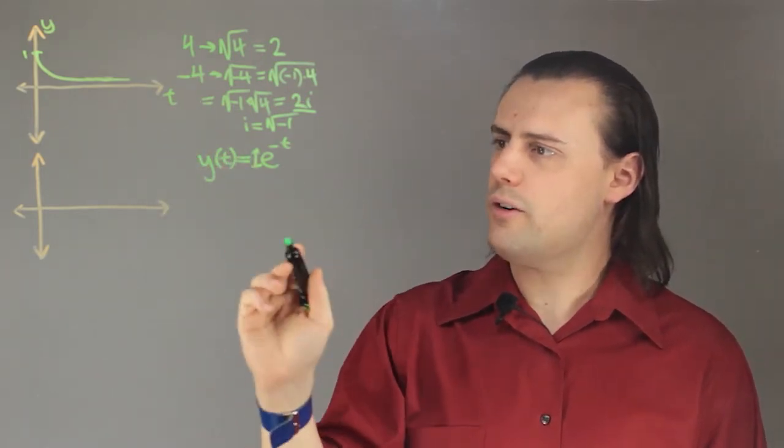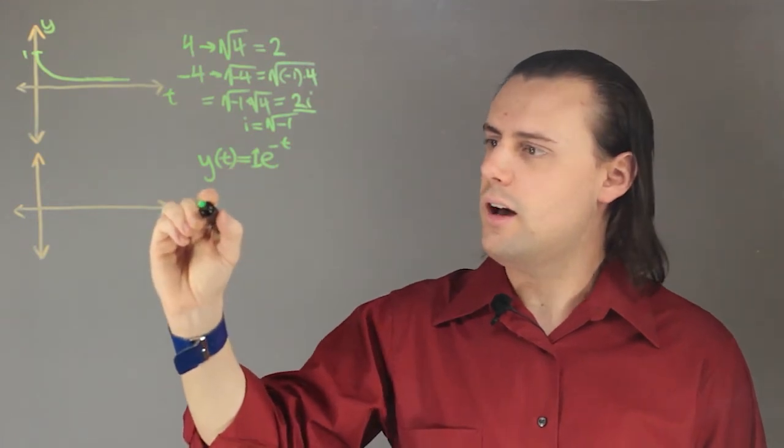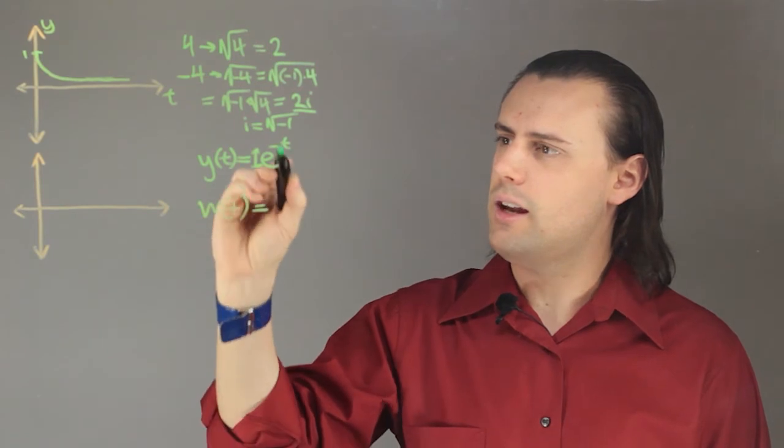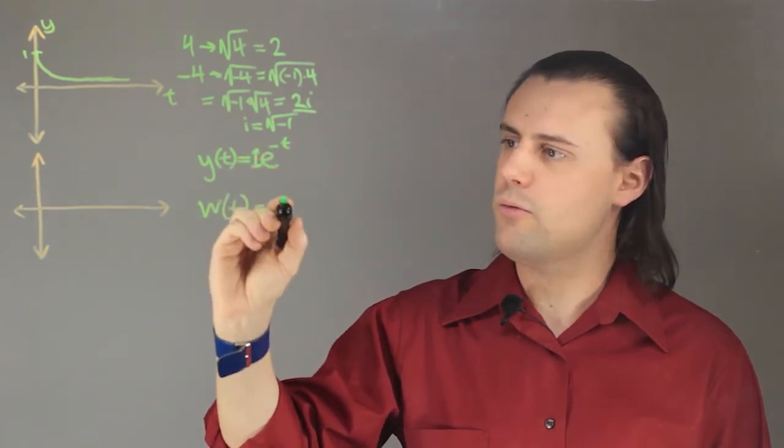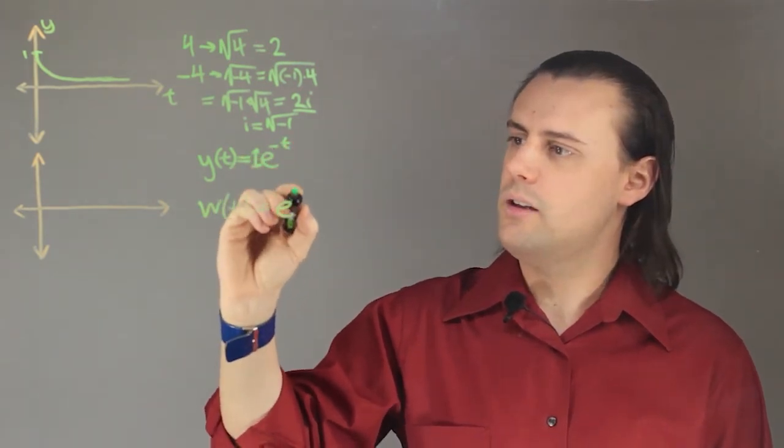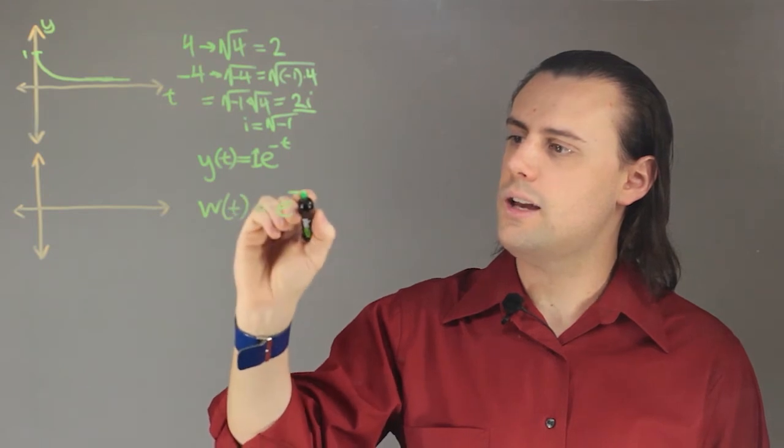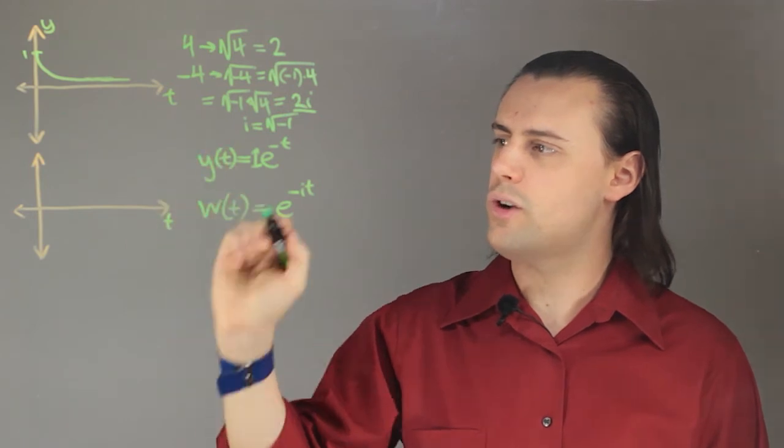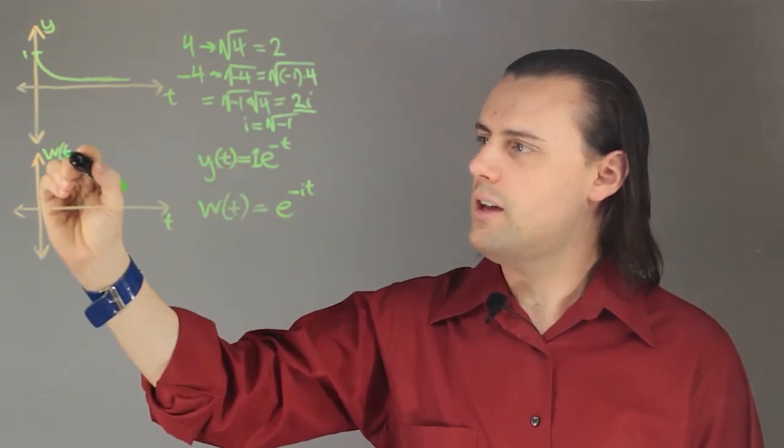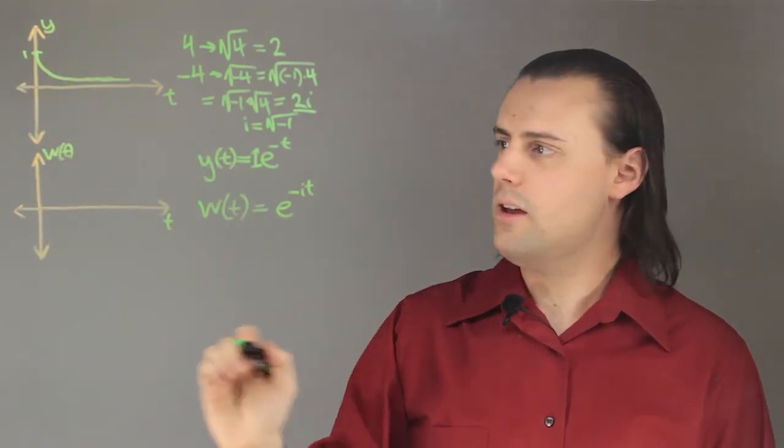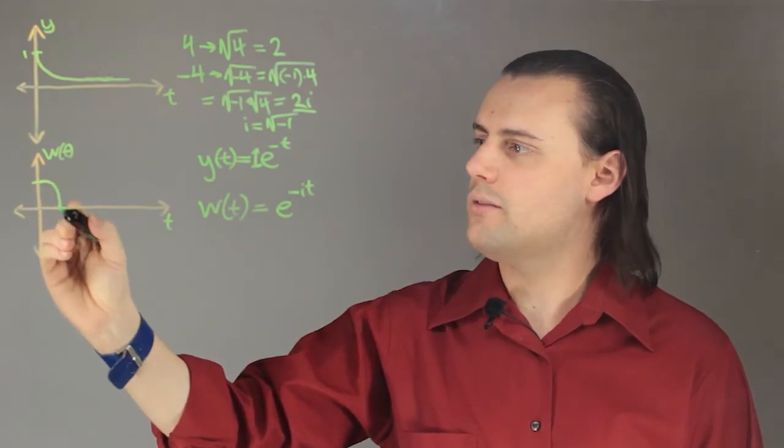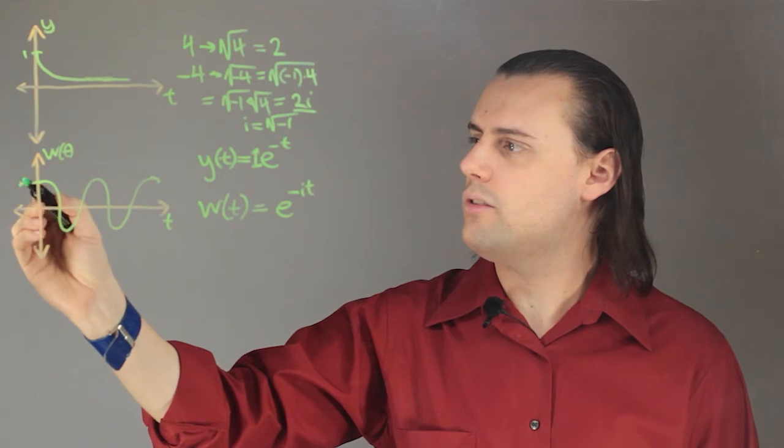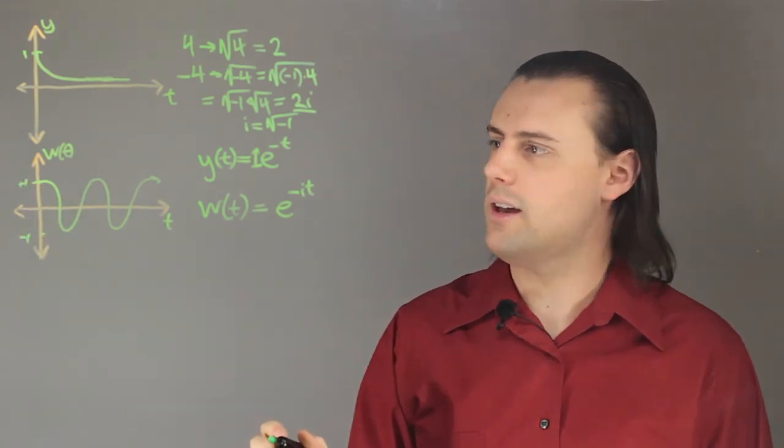If, however, in my exponential function, I now have, for example, w of t, and I replace this real number with an imaginary number, so let's say I have e to the negative i t, then this function is going to look drastically different. Instead of decaying, it will actually oscillate back and forth between positive 1 and negative 1 in this case.